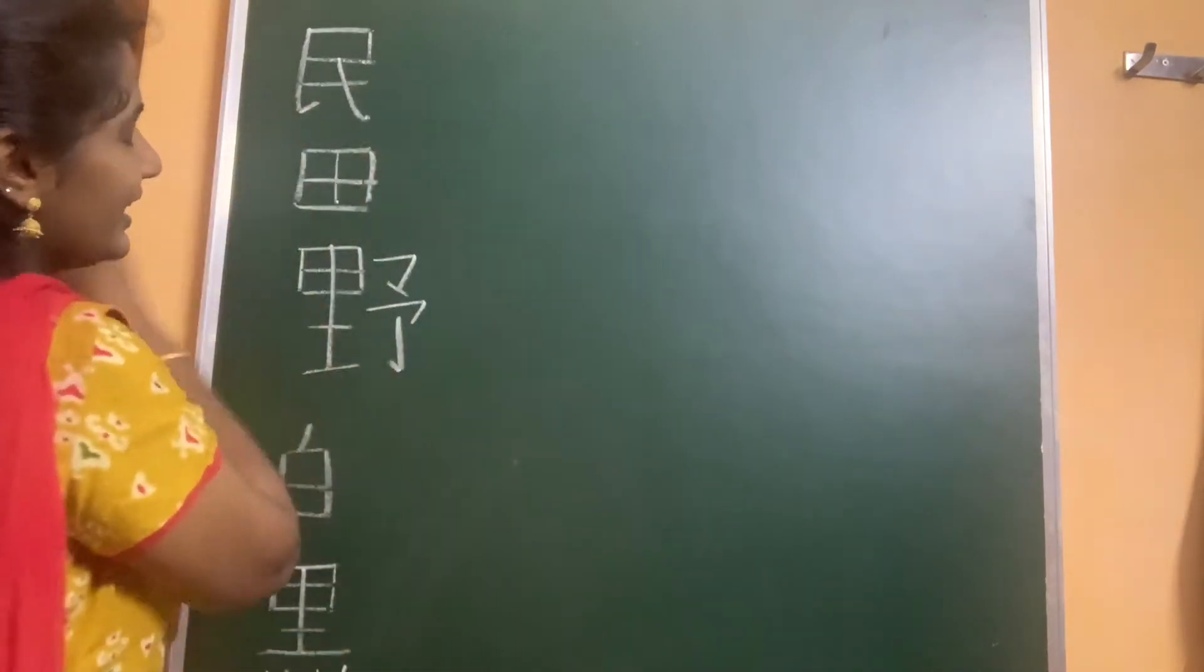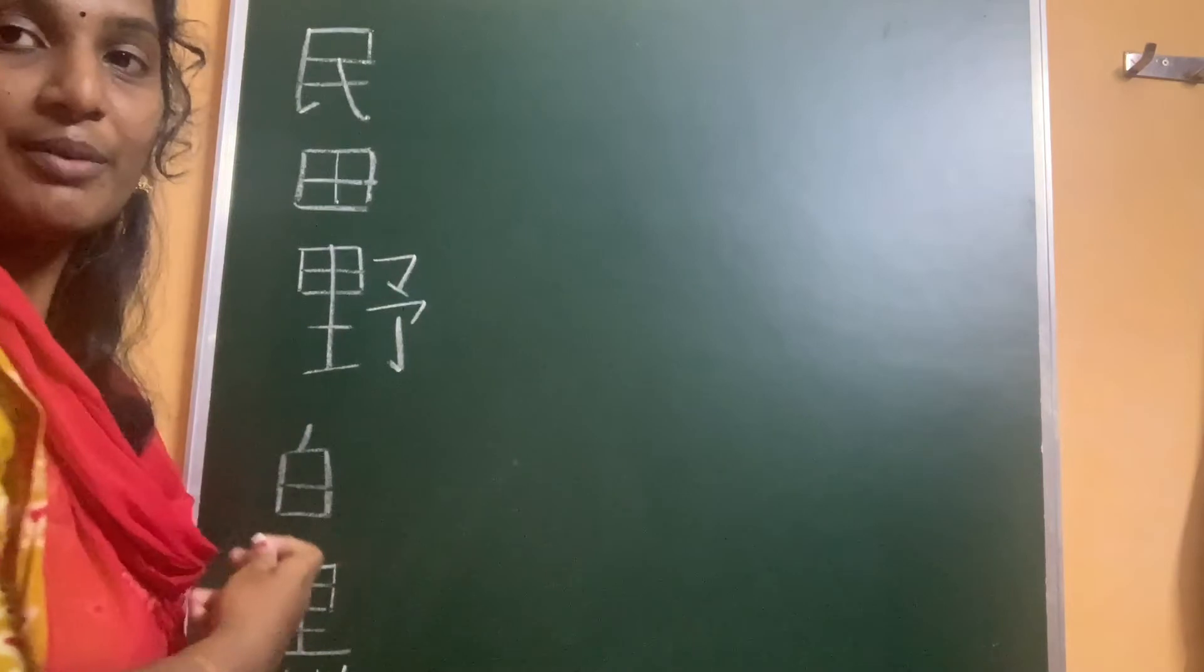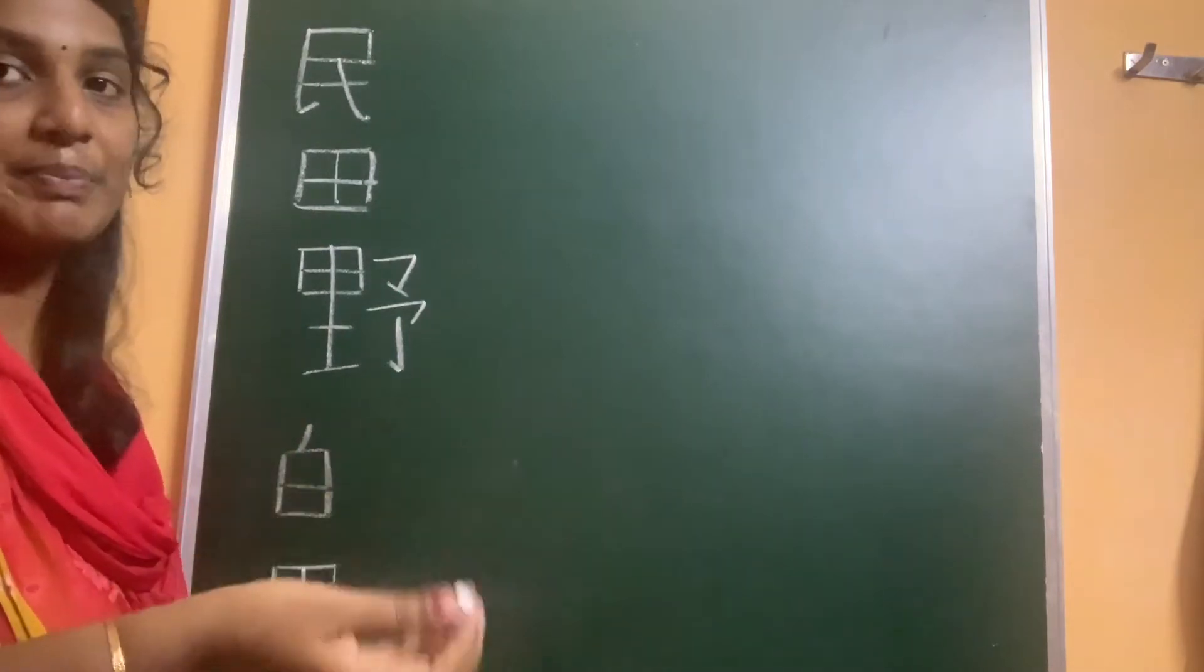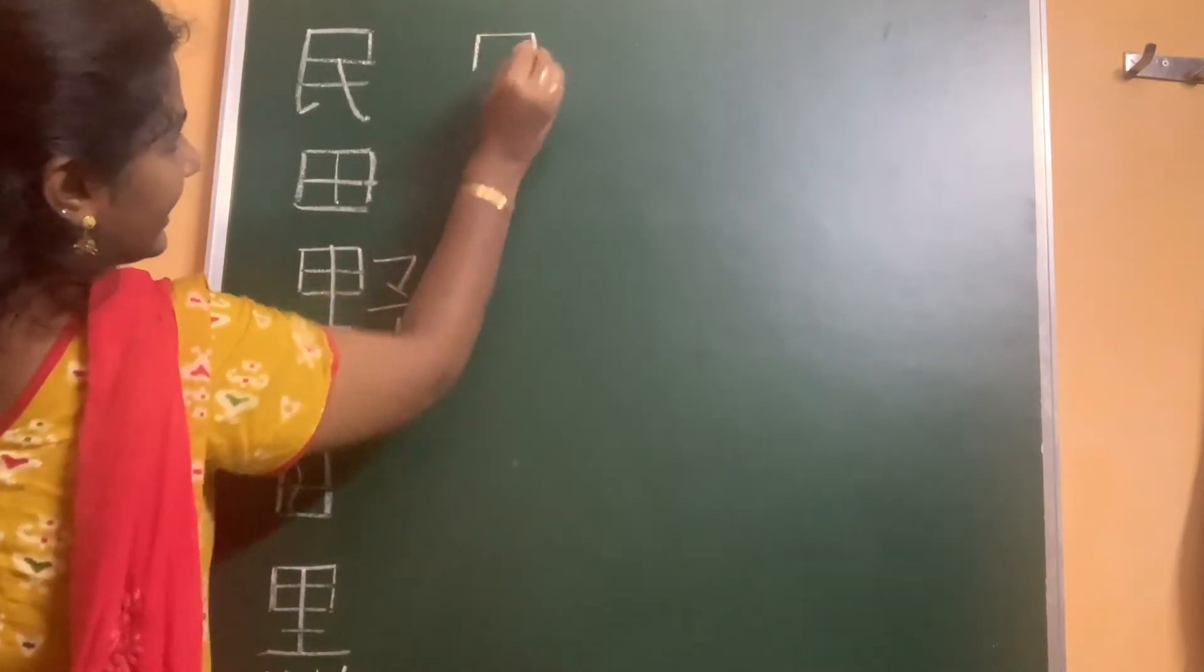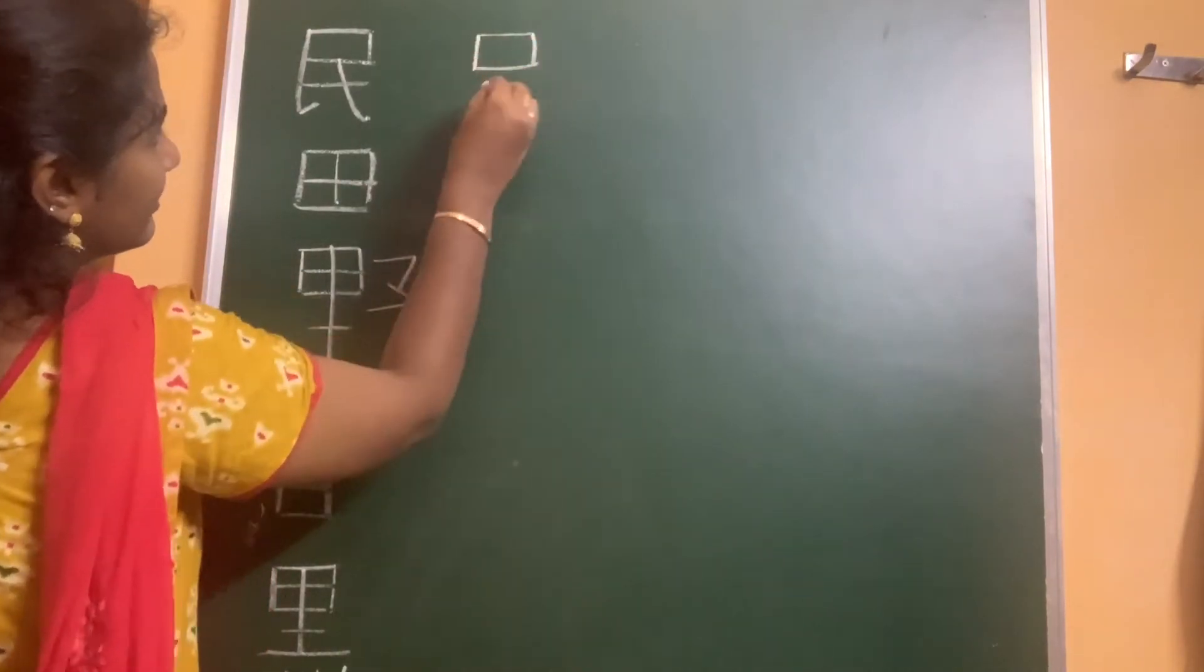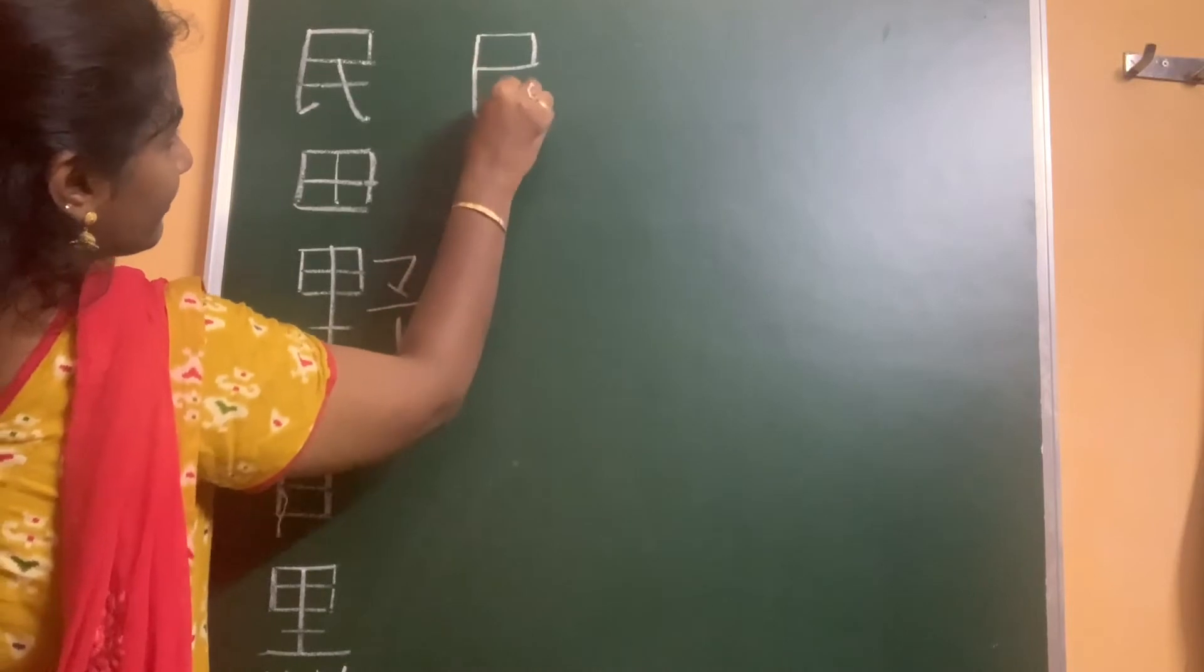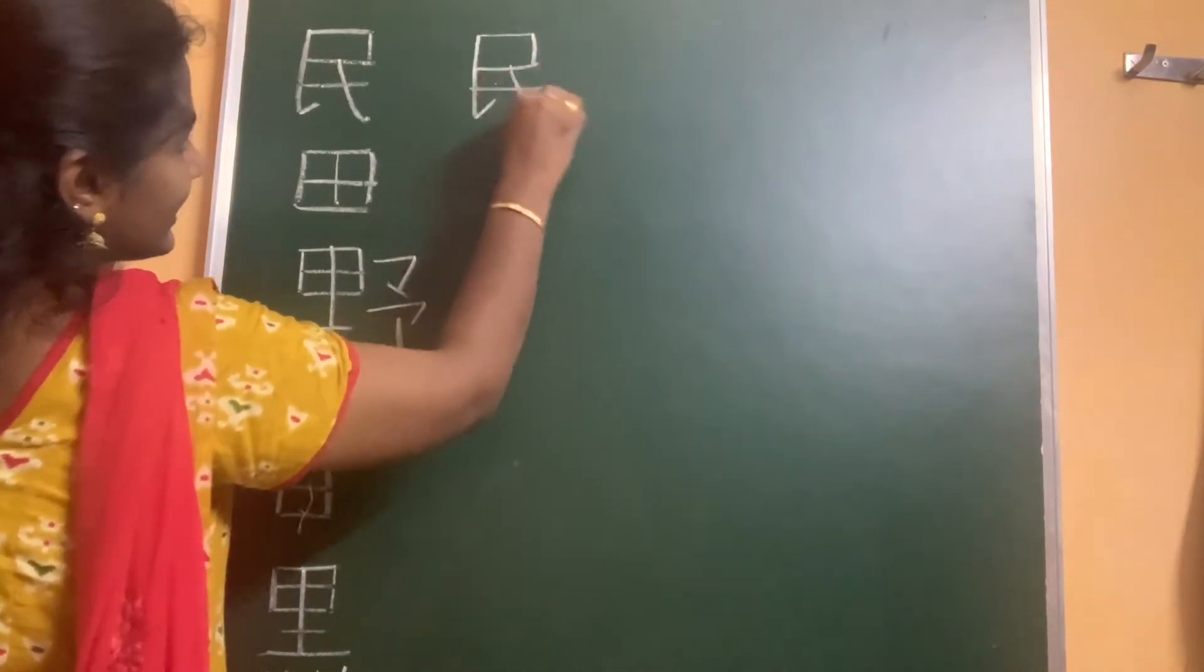Let's see how to draw this kanji for min, nation or for people. First stroke, second, third, four, five and six.